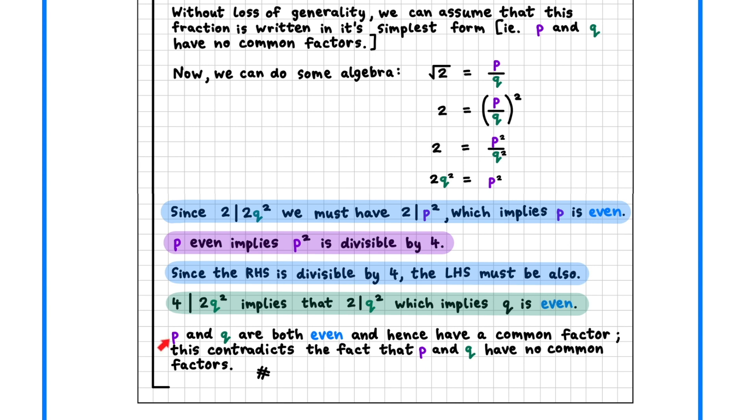p and q both being even means that they have a common factor of 2, and this contradicts our assumption that they don't have any common factors.